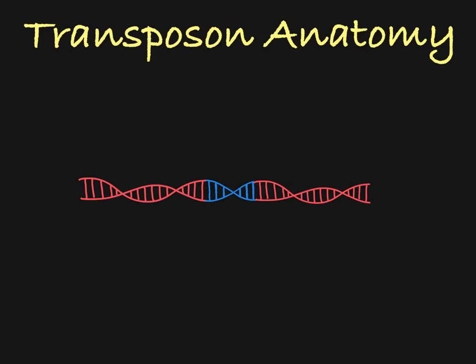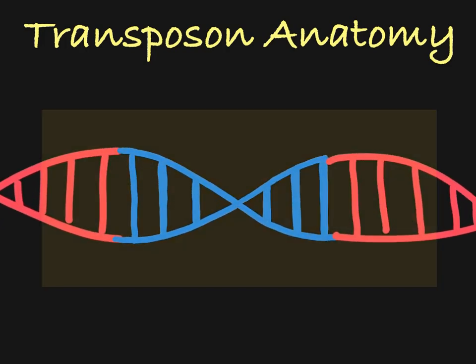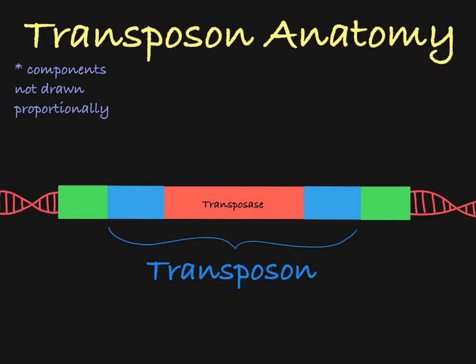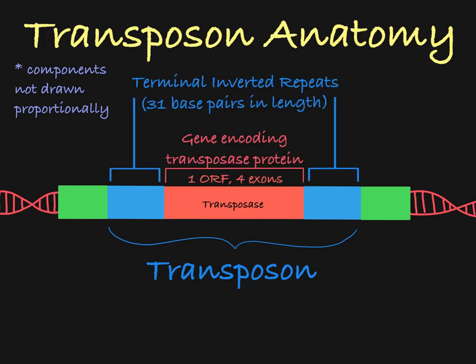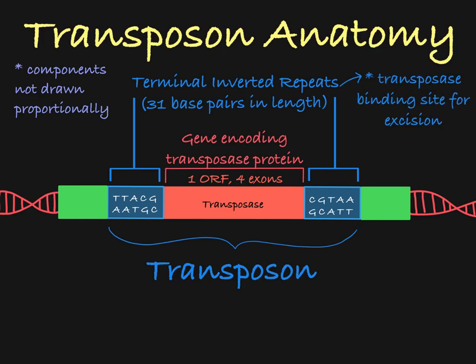So how does a transposon move from one chromosomal location to another? Let's take a closer look at the anatomy of a class II transposable element. Here we see that it contains a gene that encodes transposase. Flanking that gene at the 3' and 5' ends of the transposon are terminal inverted repeats. These sequences are reverse complements of each other, which means that you see a certain sequence at the 3' end of the transposon, and then you will see the complement of that sequence in reverse order at the 5' end of the same strand of the transposon. This inverted repeat serves as the transposase binding site.